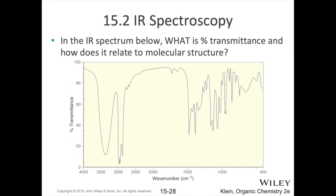What does an infrared spectrum look like? On the x-axis, we have wave numbers, which are essentially a derivative of frequency — kind of like an inverse of your wavelength. On the y-axis, we have percent transmittance — in other words, how much infrared light of that particular wave number makes it to the detector. Wherever you see these downward-pointing peaks, you know that your sample has absorbed that infrared light.